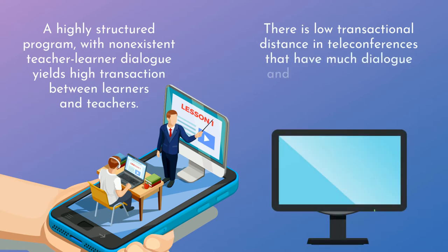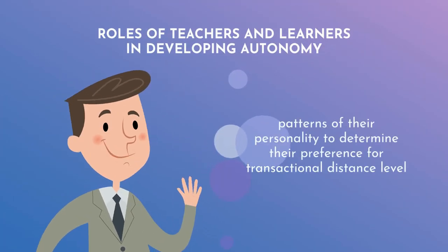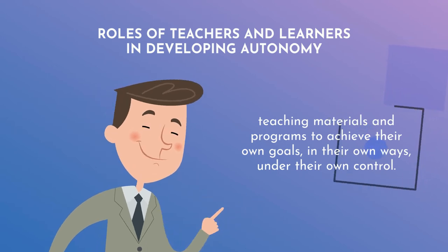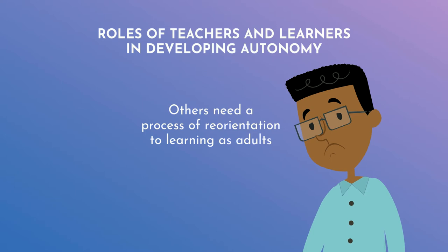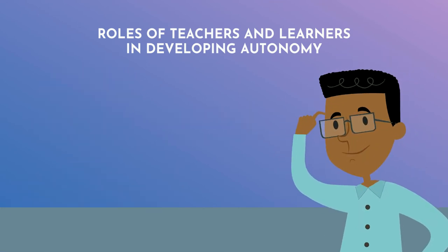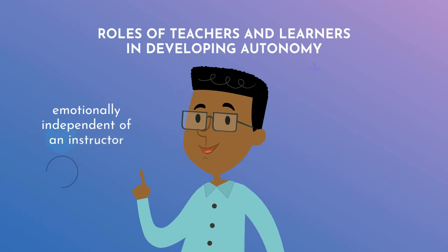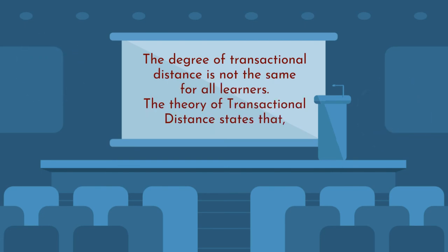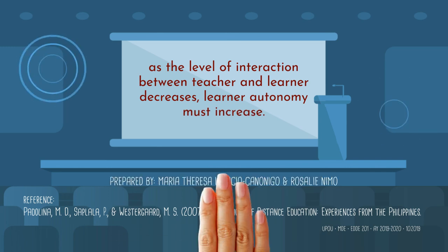However, there is low transactional distance in teleconferences that have much dialogue and little predetermined structure. Students reveal patterns of their personality to determine their preference for the transactional distance level. Students use teaching materials and programs to achieve their own goals, in their own ways, under their own control. Others, however, need a process of reorientation to learning as adults. Teachers assist learners to acquire autonomous skills. In autonomy, attention is shifted to the ability of the students to share responsibility for their own learning. A learner is emotionally independent of an instructor and has a self-concept of being self-directed. The degree of transactional distance is not the same for all learners. The theory of transactional distance states that as the level of interaction between teacher and learner decreases, learner autonomy must increase.